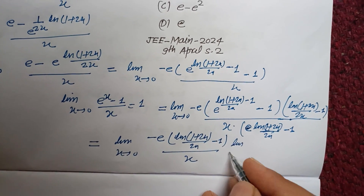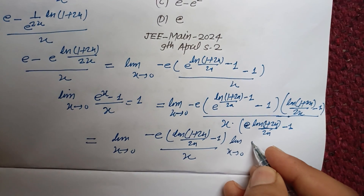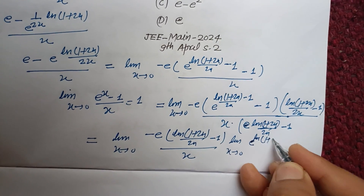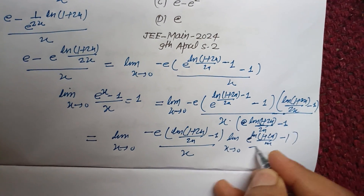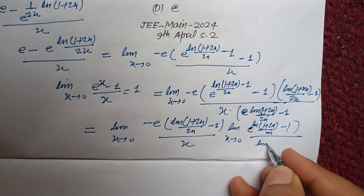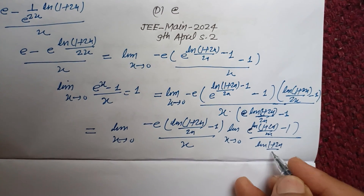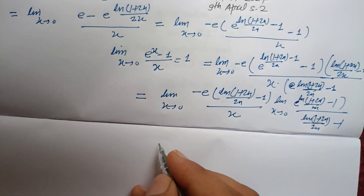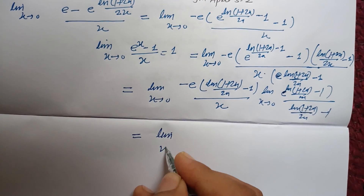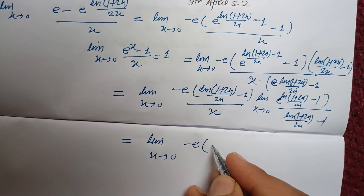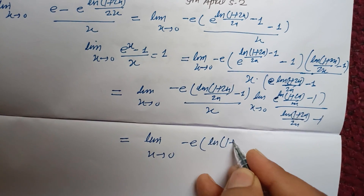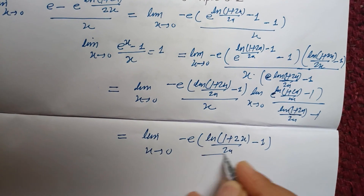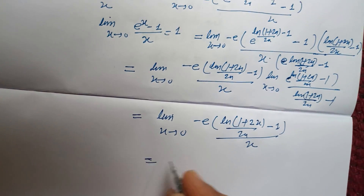The part limit as x tends to 0 of (e^(ln(1+2x)/(2x) - 1) - 1) / (ln(1+2x)/(2x) - 1) equals 1 by the standard limit. So we are left with: limit as x tends to 0 of minus e times [ln(1+2x)/(2x) - 1] / x. This equals 1.